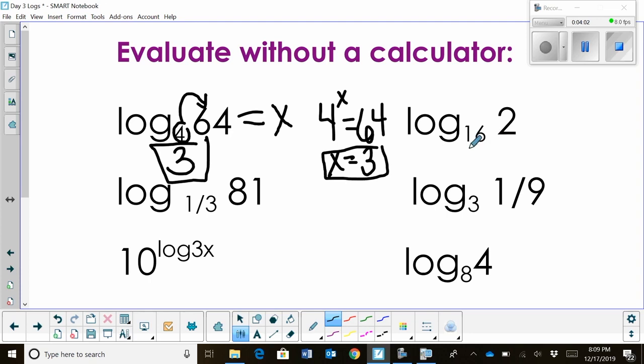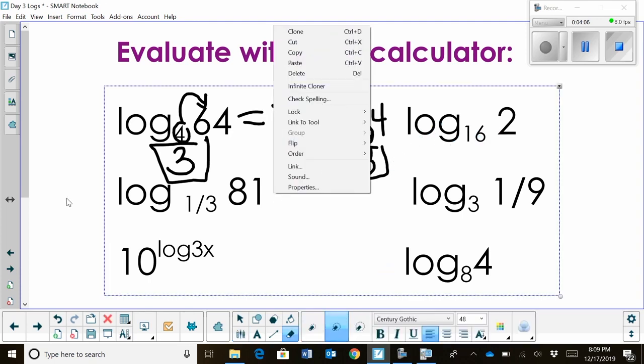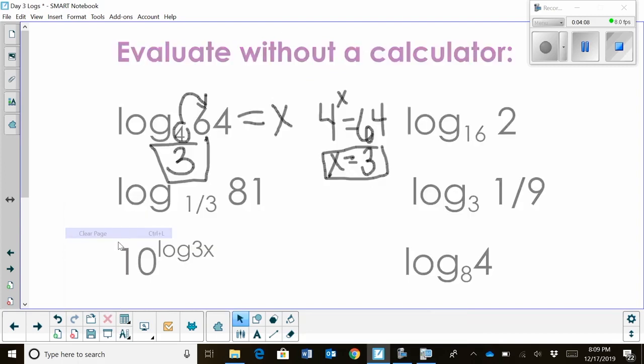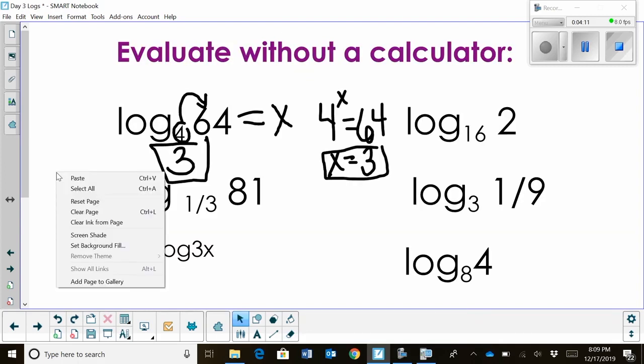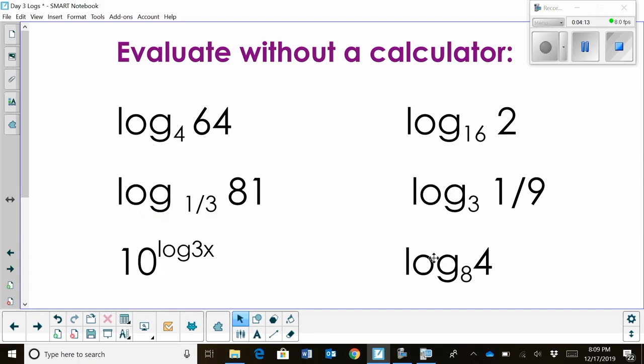So a good way to think of it is 4 to what power gives me 64. So let's take this next one. I'm going to erase this for you so you don't have as much stuff on here. Let's just clear the ink there. Okay, so let's rewrite this log base 16 of 2. So if I set this equal to x,